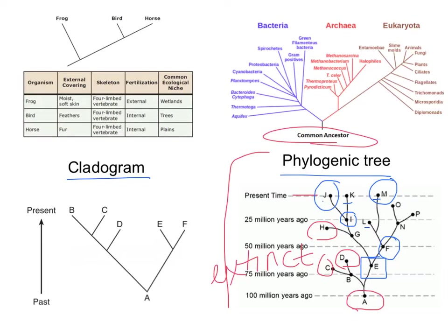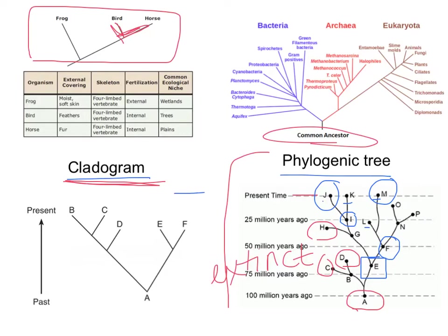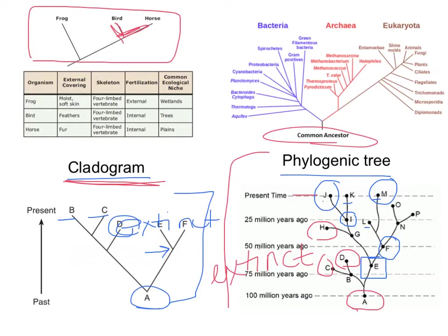The cladogram is set up very similarly. A cladogram groups organisms into clades, or kind of like families. This cladogram on the top shows that the bird and the horse are more closely related because they branch off closer together. On the bottom one, A would be your common ancestor for everything. B and C would be more closely related to one another than D because they branch off closer together. D, E, and F would all be extinct because they don't make it to present day.